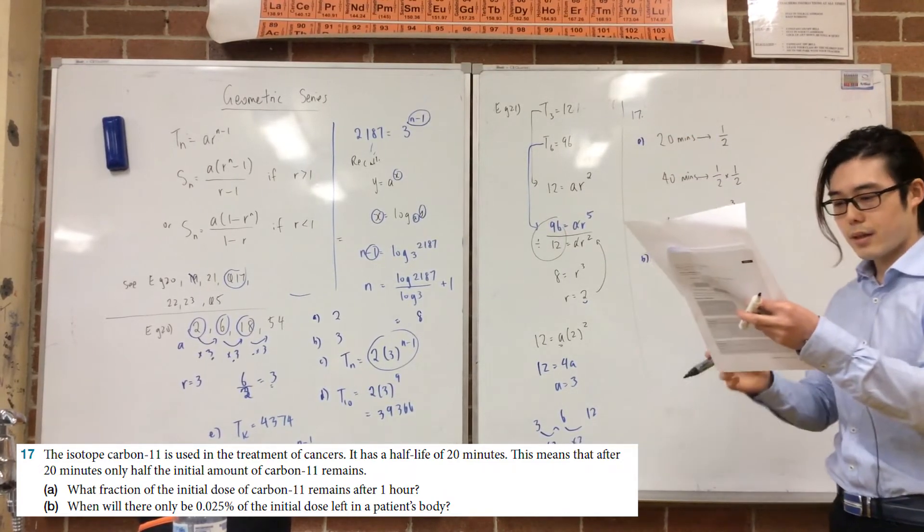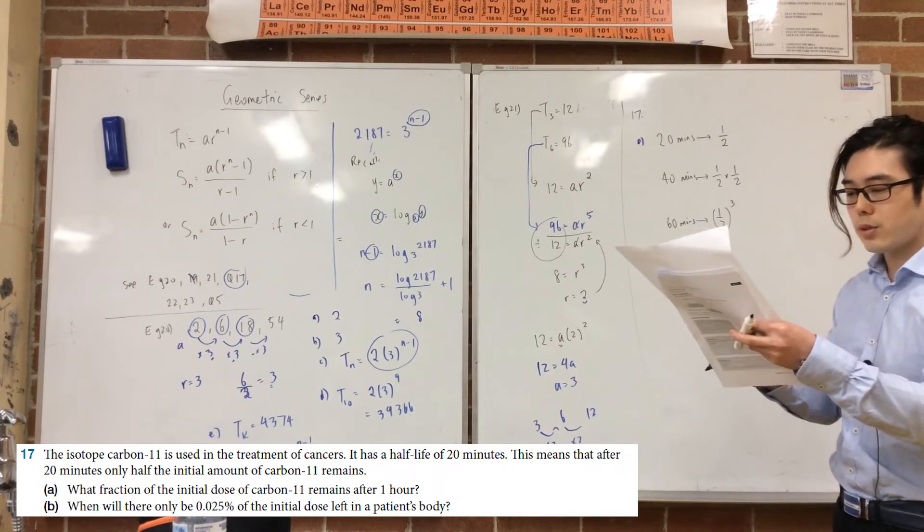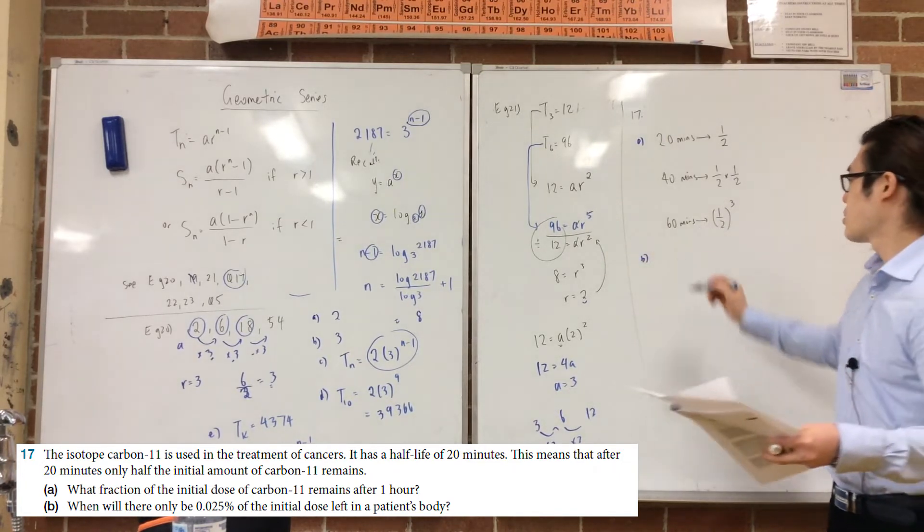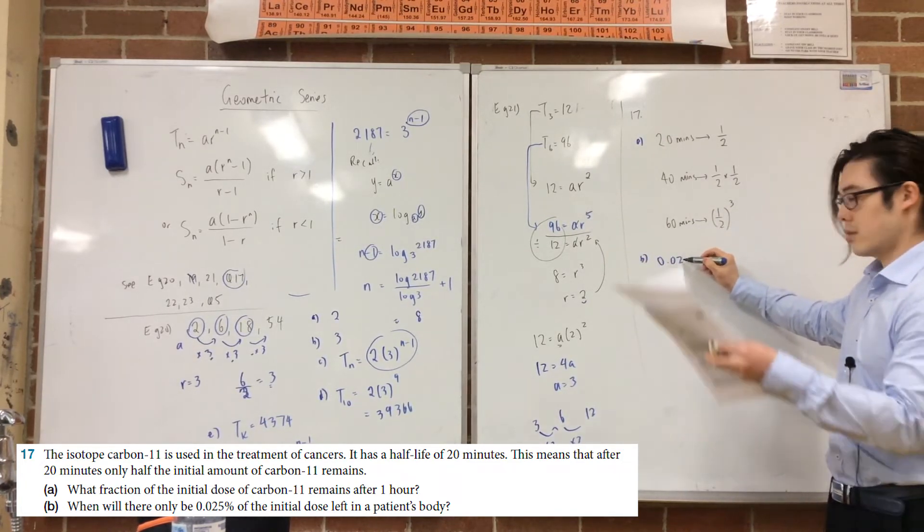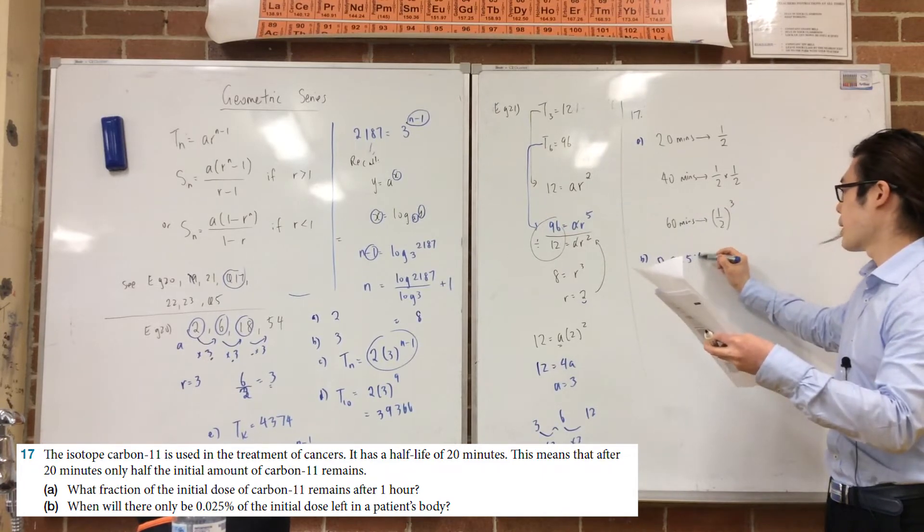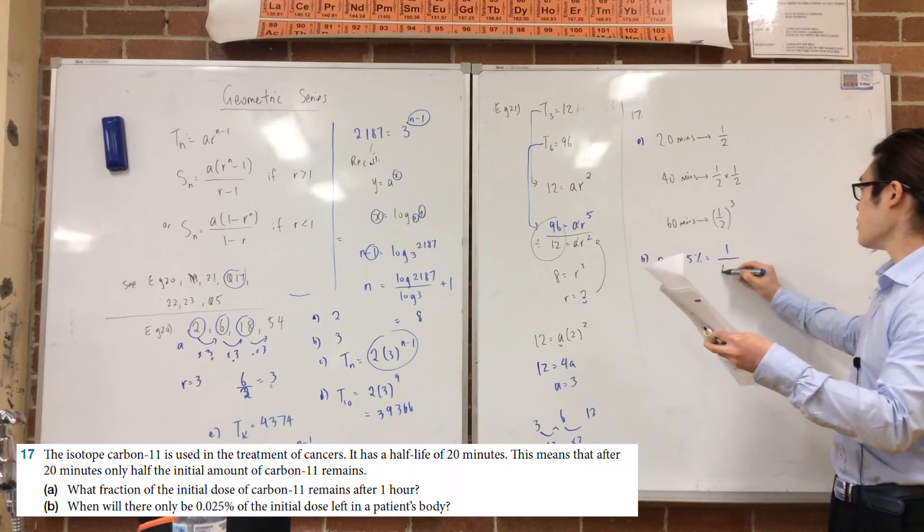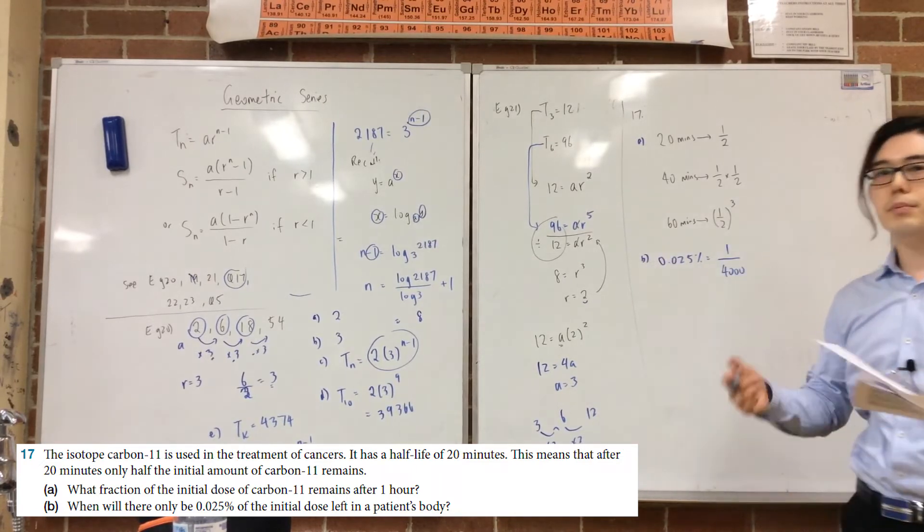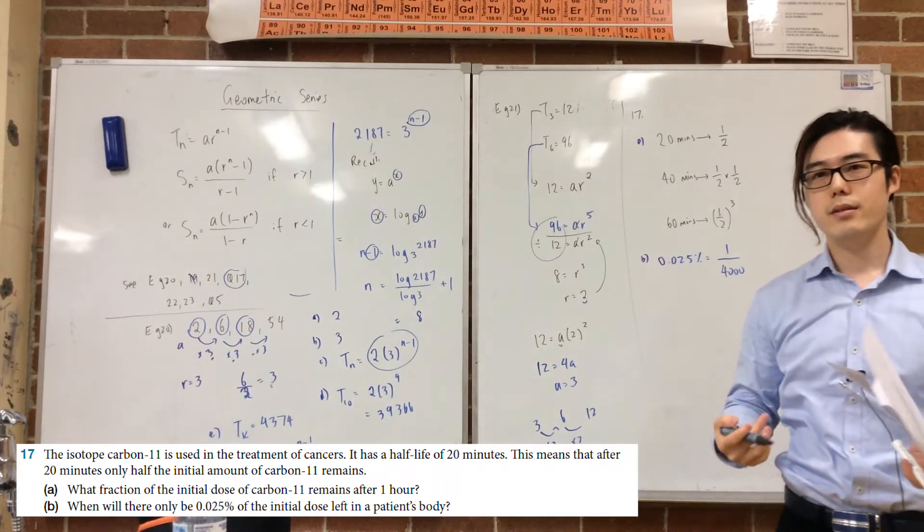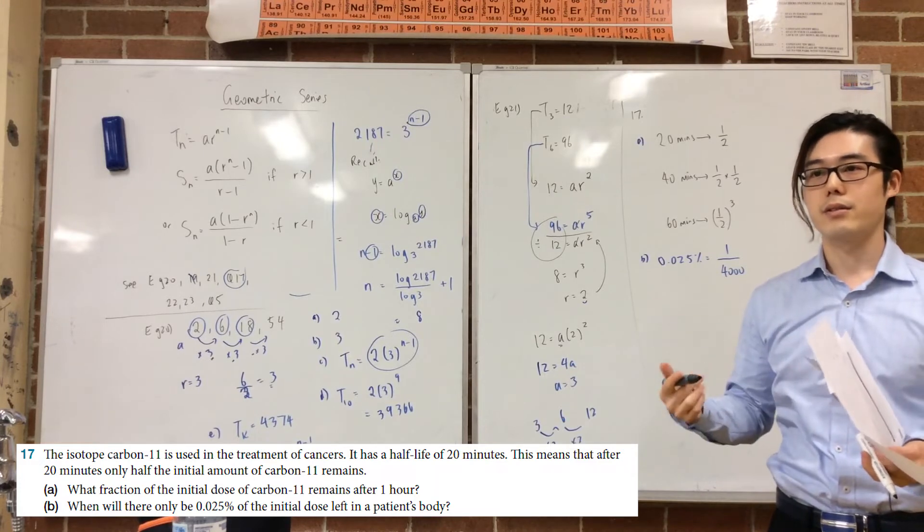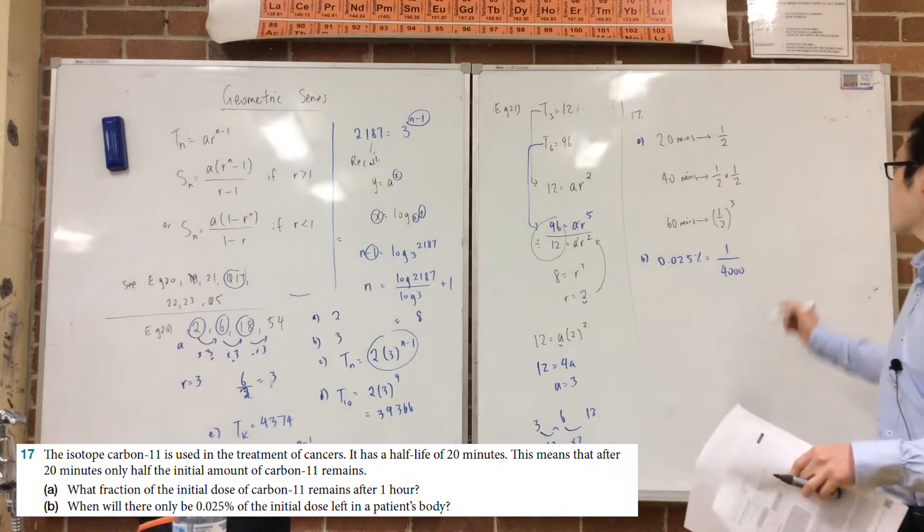But it's this setup that's actually quite tricky to do. But for the second part, when will there be 0.025% of the initial dose? So what you need to do for this one, girls, is be able to write the percentage as a fraction, which is, if you put 0.025 divided by 100, you get 1 over 4,000.